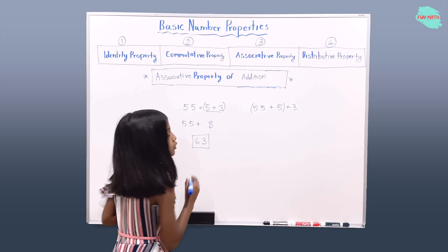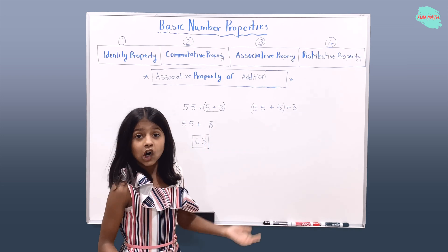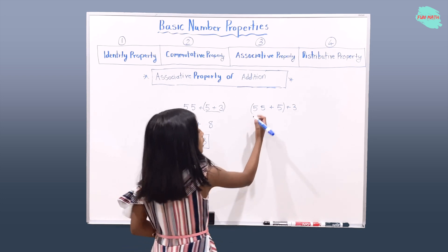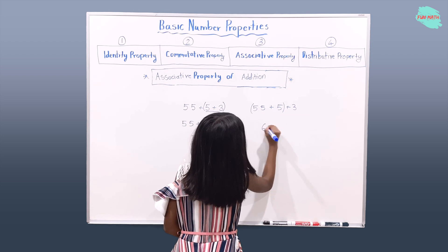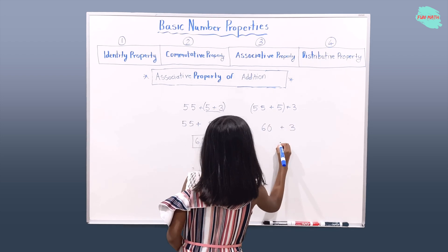So now let's solve this one. The associatives here are 55 and 5. So if you add 55 and 5, what will you get? You will get 60. You will write 3 as it is and you will get 63.